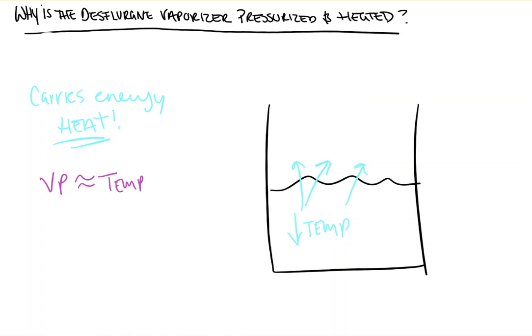So, the hotter something is, the more of it is in vapor form, the higher the vapor pressure. As the system begins to cool, it gets harder and harder to liberate molecules from the liquid to the vapor phase because they can't move as fast because they're colder.